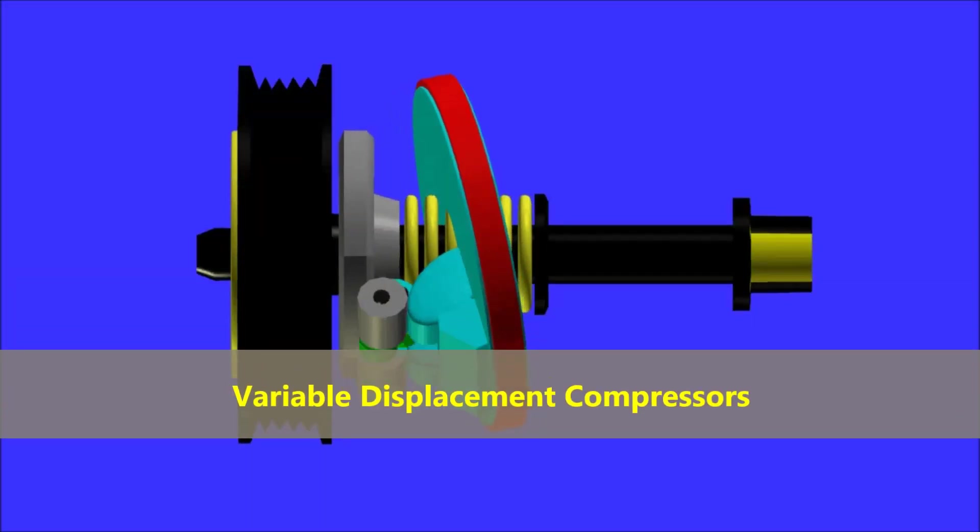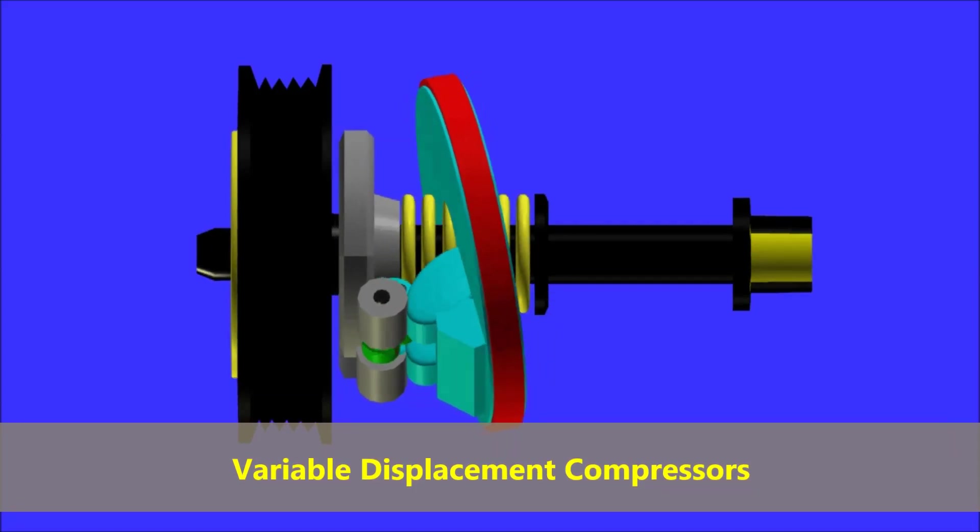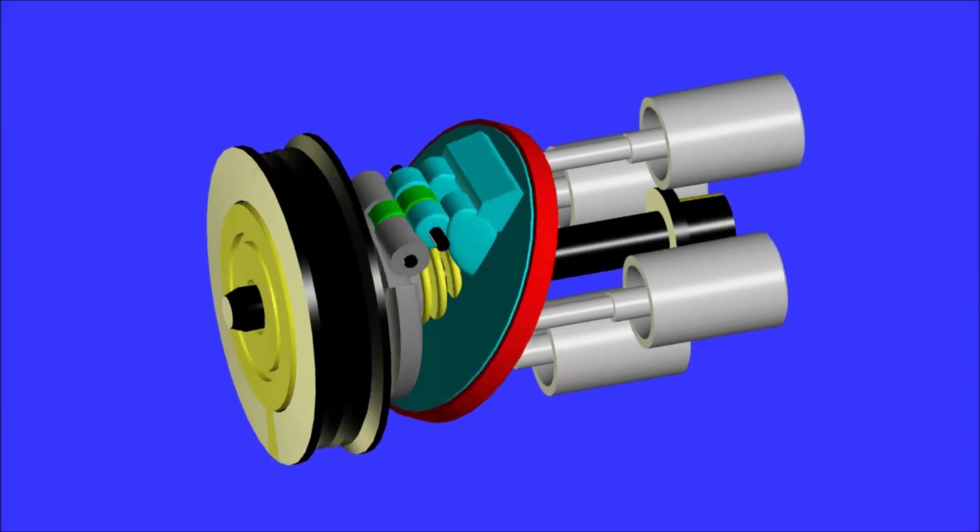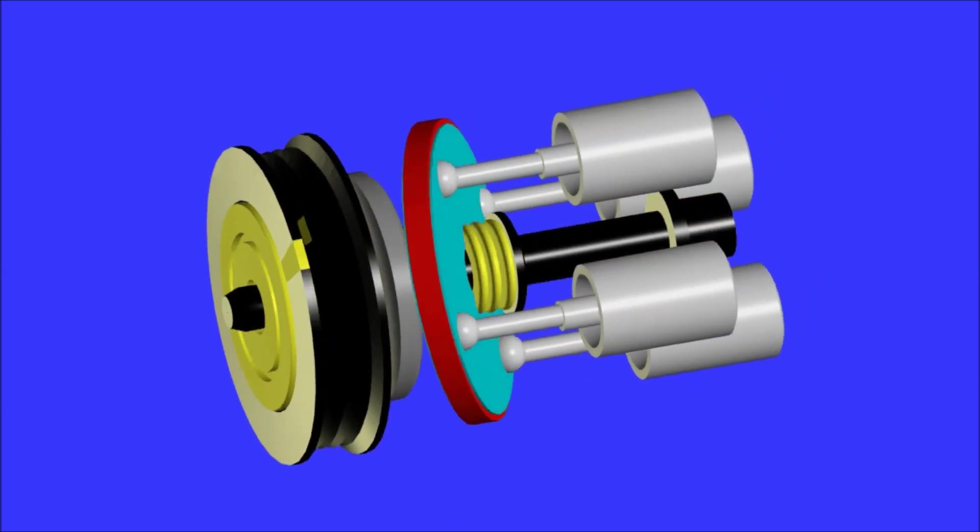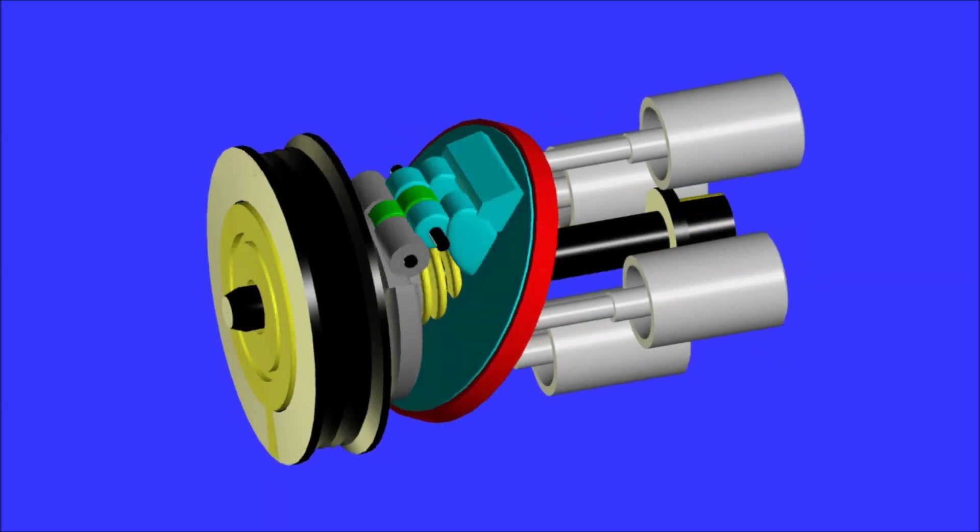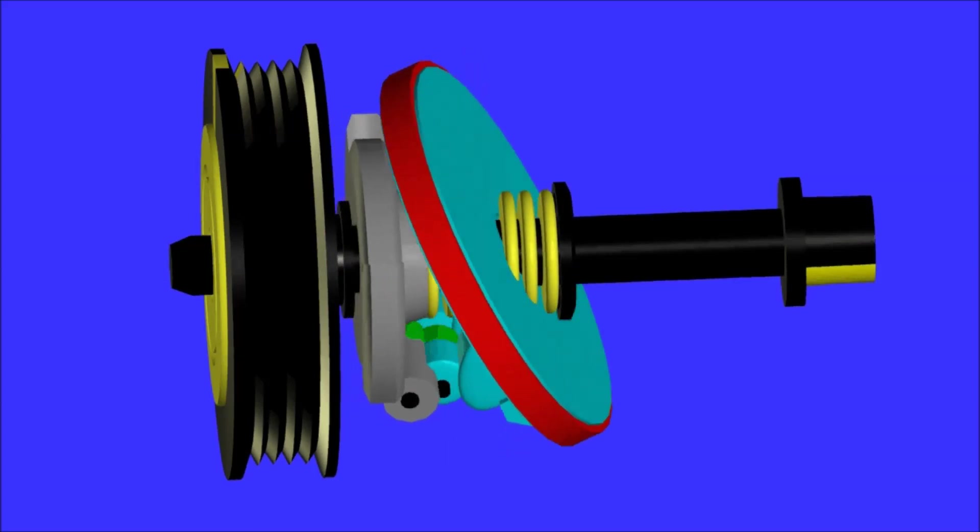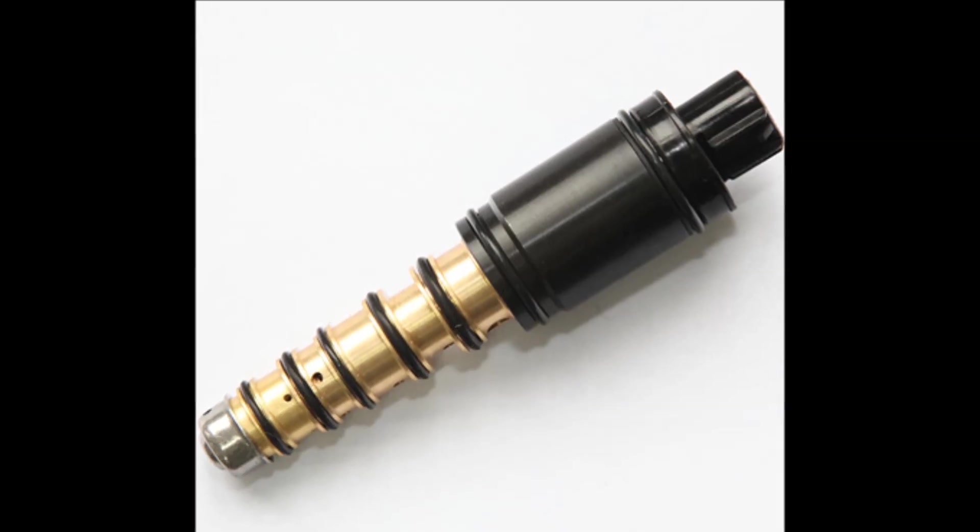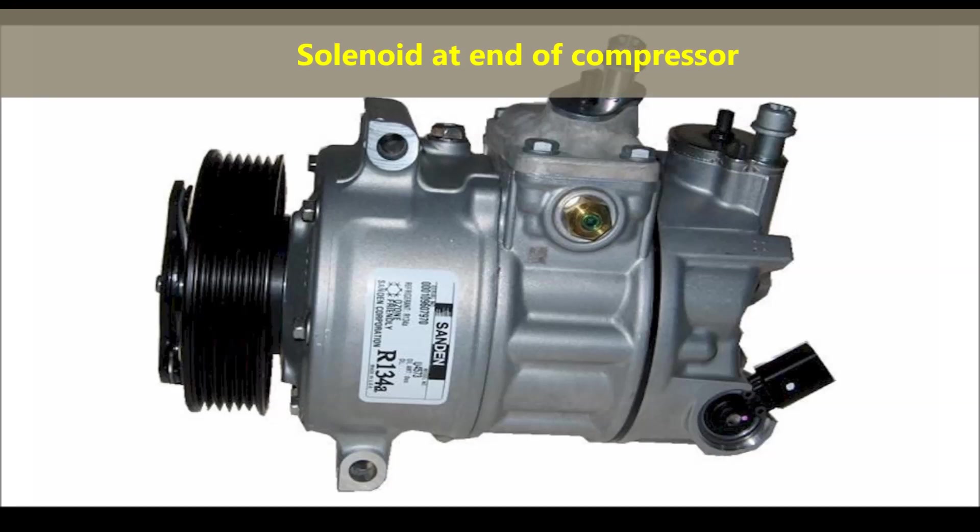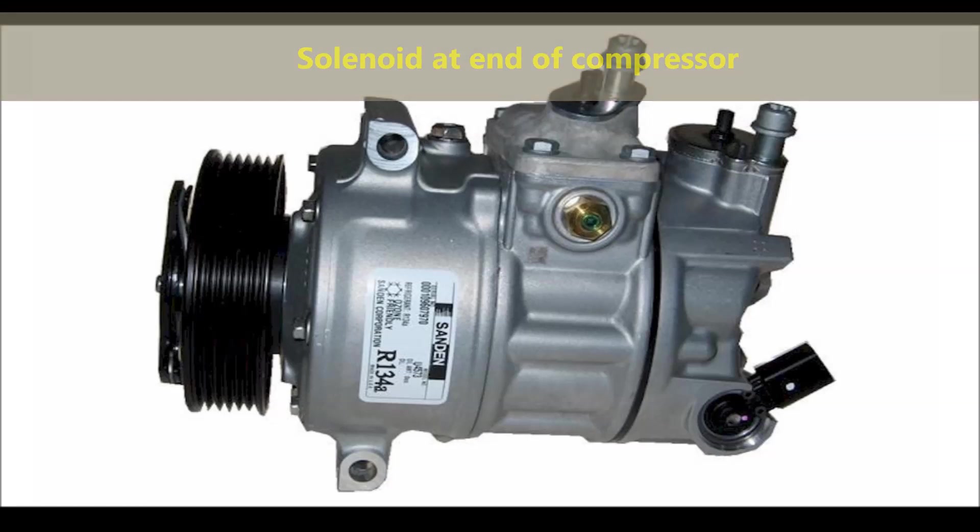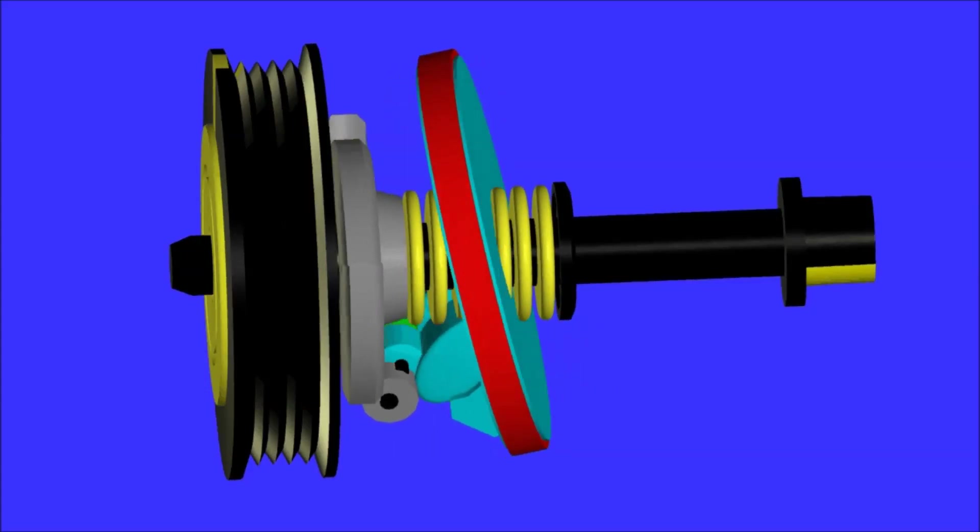So here it is, this is the variable displacement compressor, and it actually changes the swash plate angle. Basically, it has a solenoid, it's a hydraulic solenoid, a PWM control hydraulic solenoid. We have a PWM bidirectional controller unit that we actually use to command this particular compressor. These compressors get replaced all the time, they're very expensive, and there's nothing wrong with them.